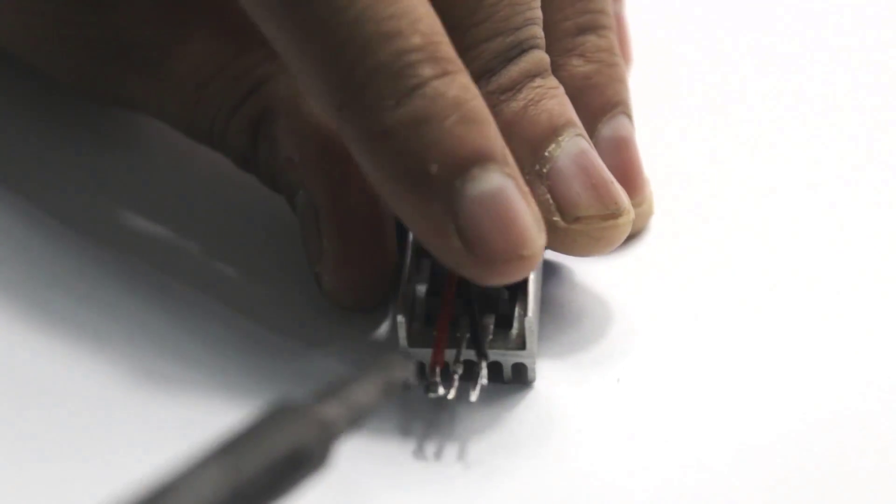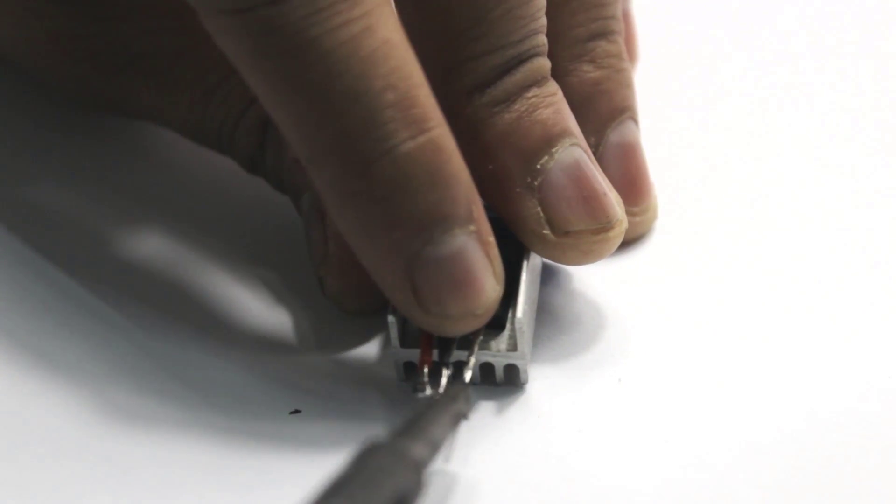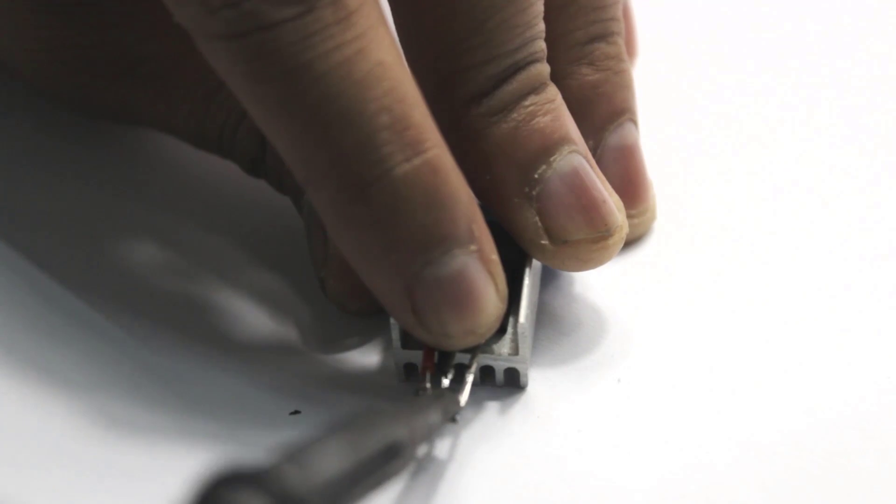Now it was time to solder all the wires into the 7805, as I have already shown in the schematic earlier.